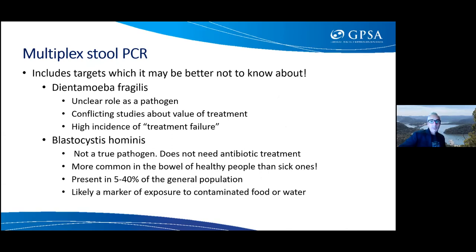The multiplex PCR includes targets it's probably better not to know about. Dientamoeba fragilis is a gray area — it probably is a pathogen in some cases with conflicting studies showing benefit or no benefit of treating. Blastocystis hominis, however, has a strong consensus that it's really not a pathogen. It's present in stools of 5 to 40% of the general population, more commonly found in healthy people than sick ones — probably a marker of exposure to contaminated water rather than a pathogen.